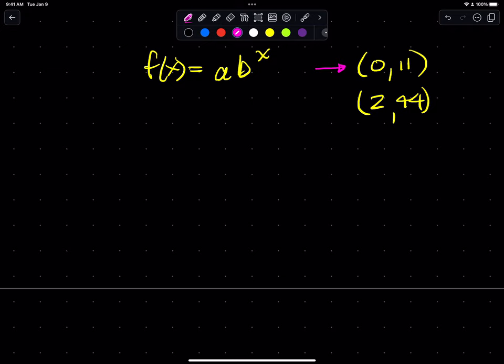When I substitute this point, 0 comma 11, into my function, 11 is my y value or my output—the height of my function. I don't know what a and b are, but if I put 0 in for x, hopefully we know that b to the 0 is equal to 1.